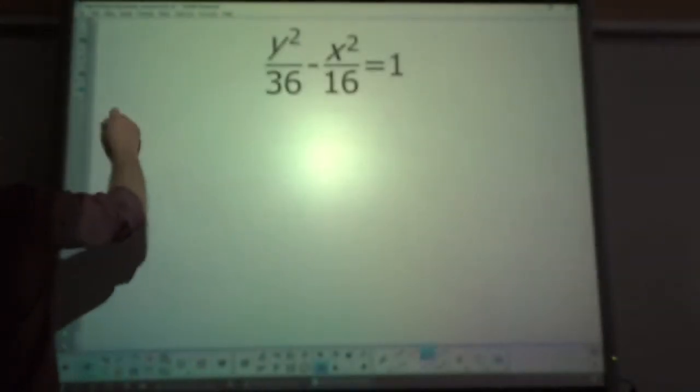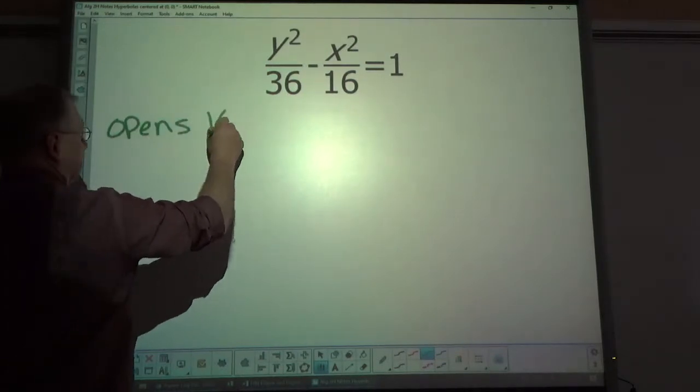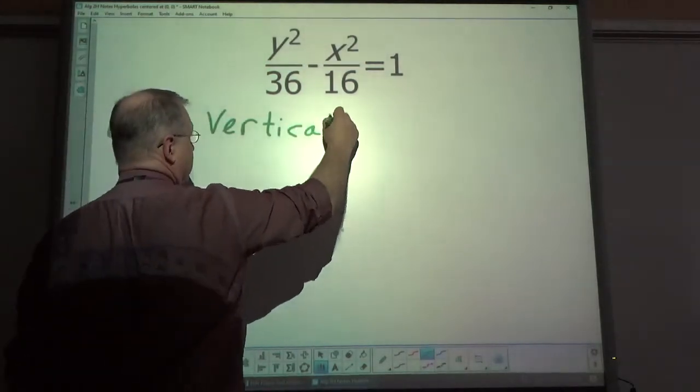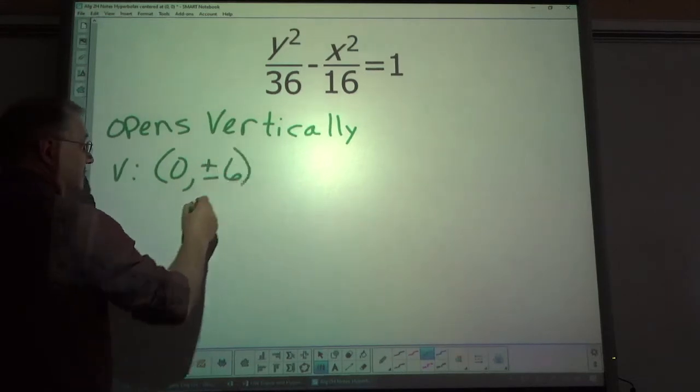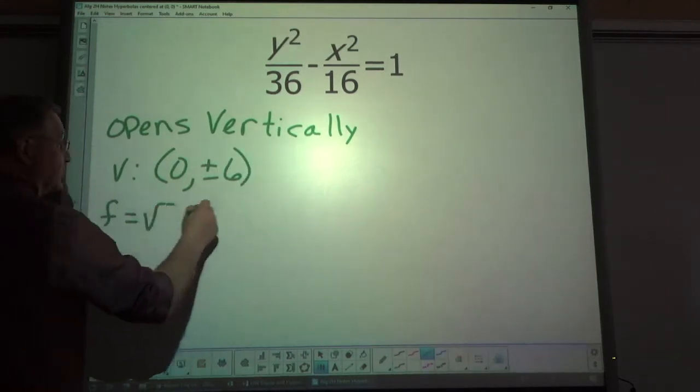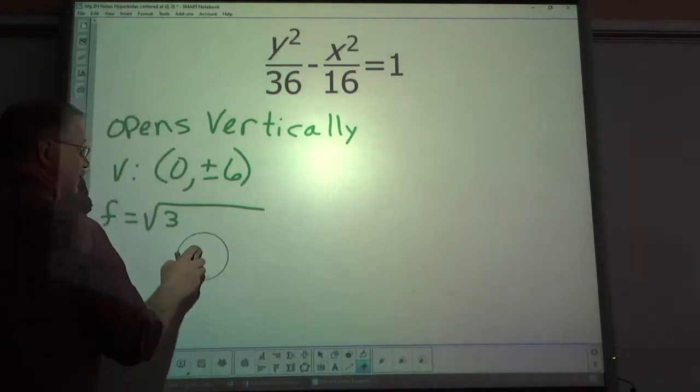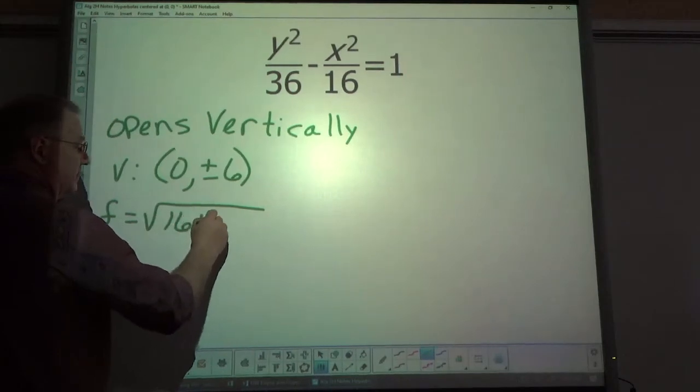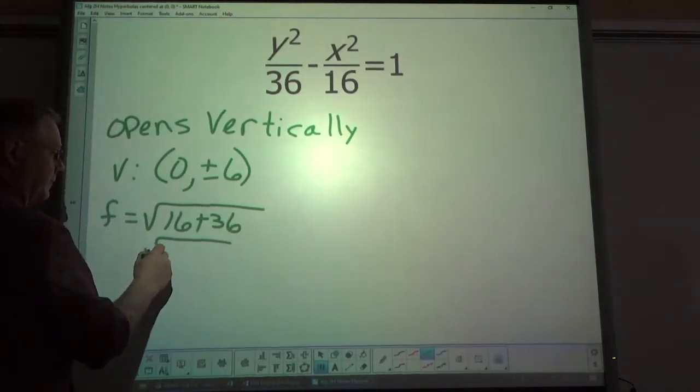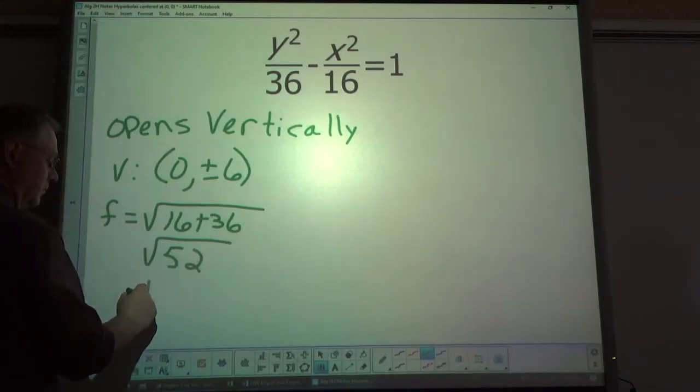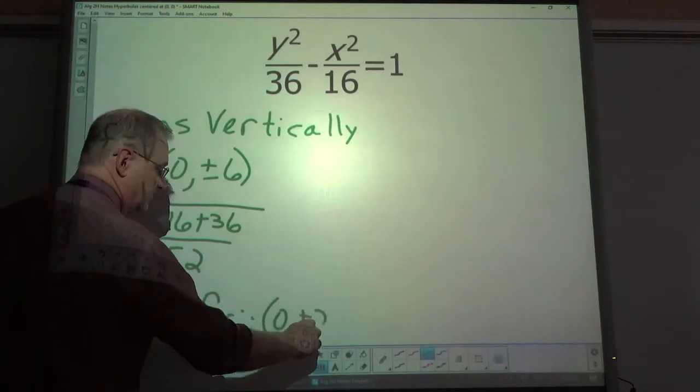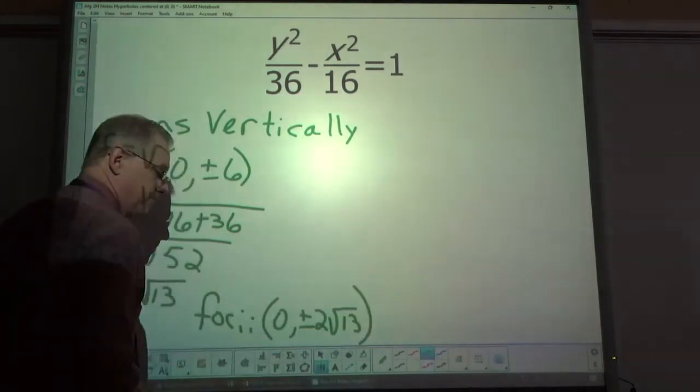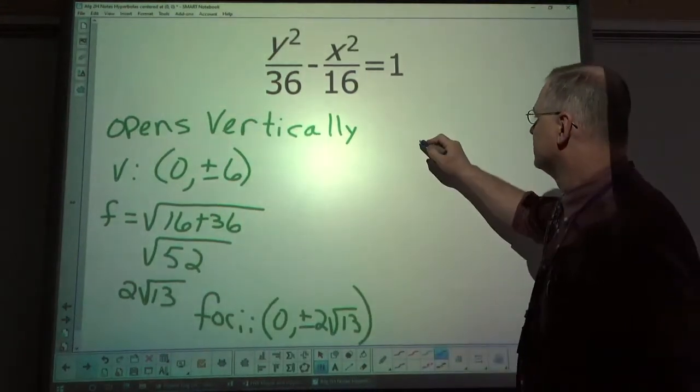All right. So, open vertically. The vertices are going to be at 0, comma, plus or minus 6. F is going to be the square root of, it should be 16 first. It doesn't really matter. Let's see. That's 52 or 2 square roots of 13. So, the foci is at 0, comma, plus or minus 2 square root of 13.